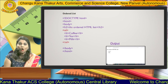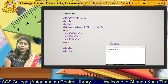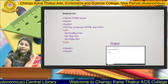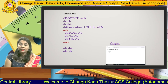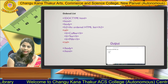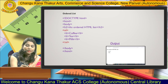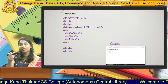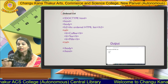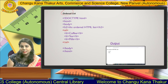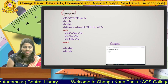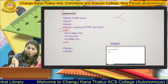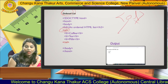Next are the ordered list and unordered list. If you want to display content on the web page in a list format, use the list concept. There are three types of lists: ordered list, unordered list, and the description list. An ordered list displays content in a sequential manner — 1, 2, 3, 4 or A, B, C, D. To display content in that sequence, use the OL tag — O stands for order, L stands for list.